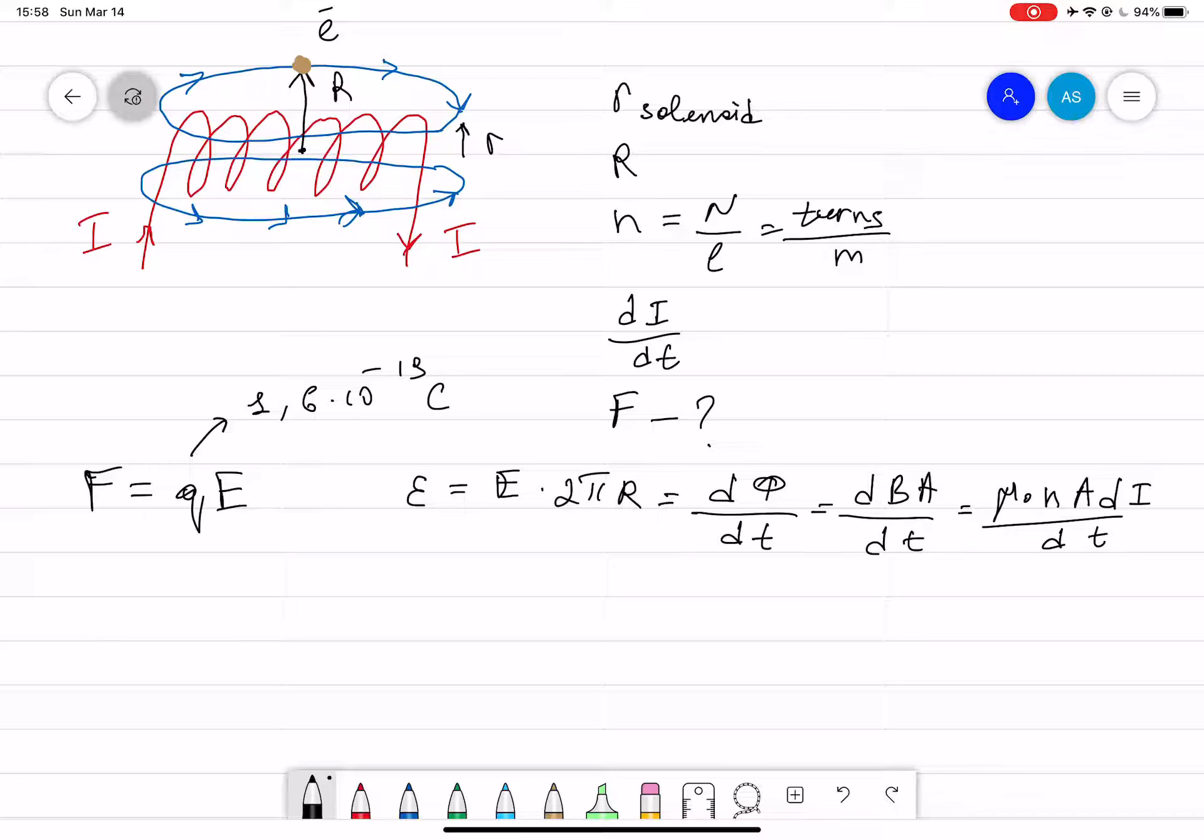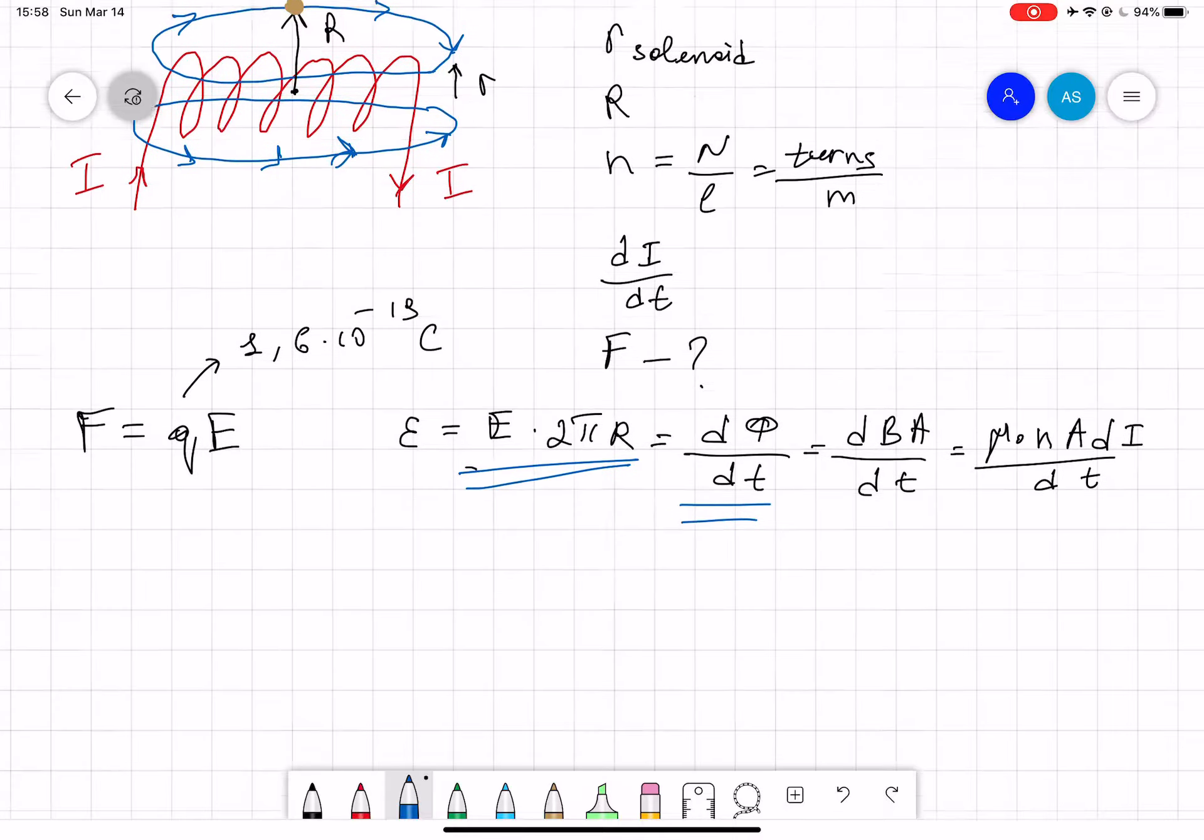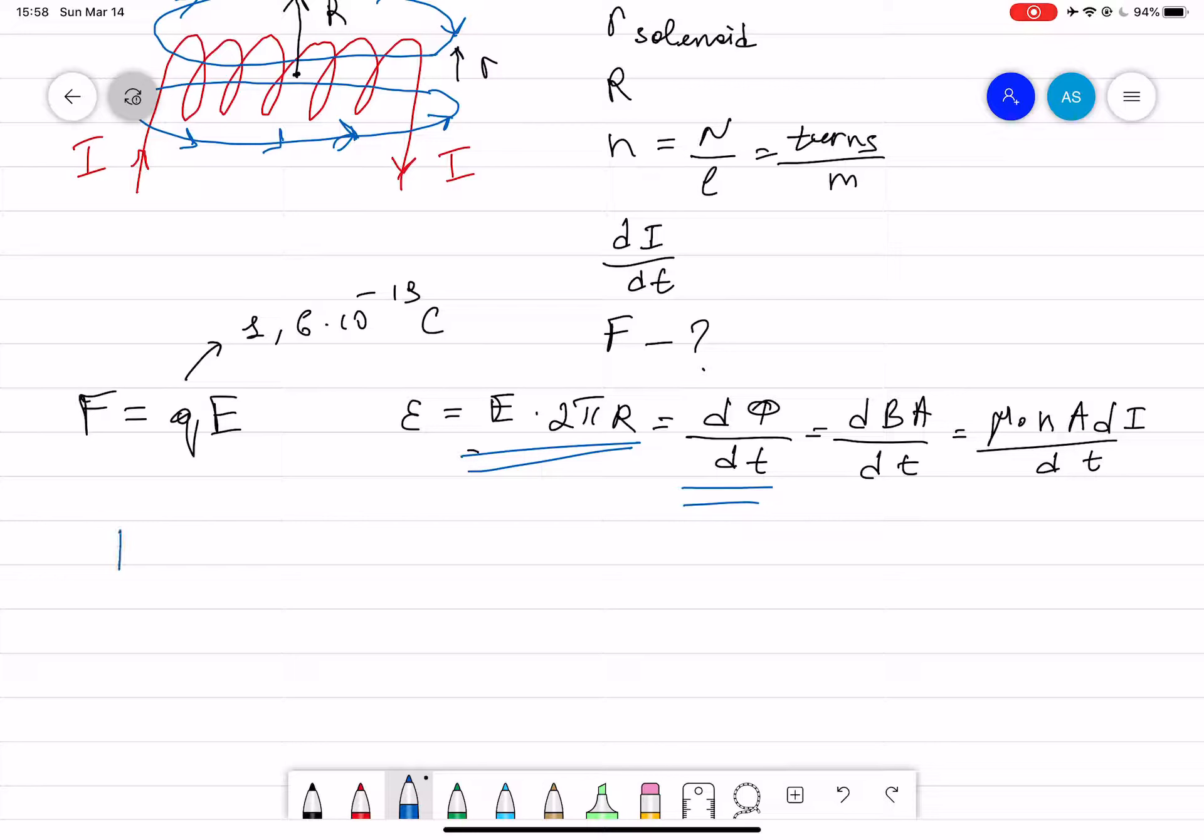Then you can say that EMF was basically equal to that one and we came to that formula. And then here we can see that electric field E equals μ₀nA (area of the solenoid)